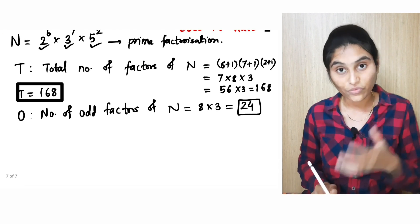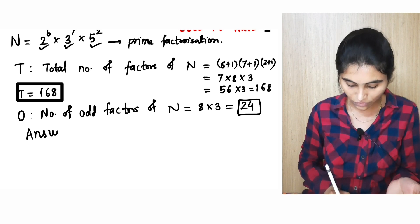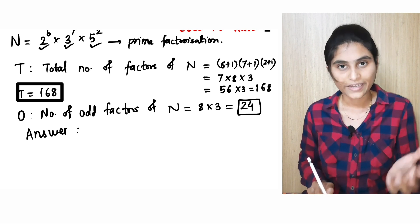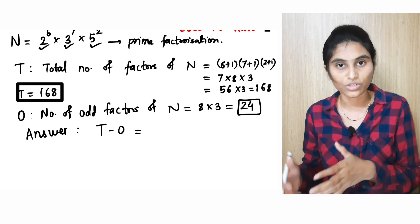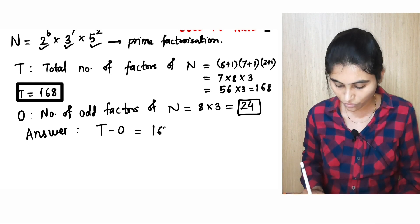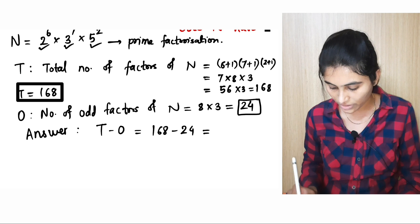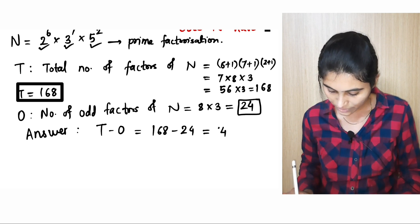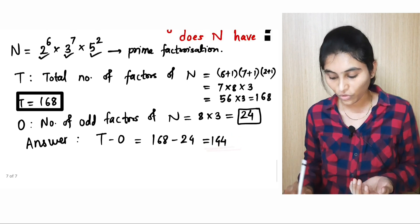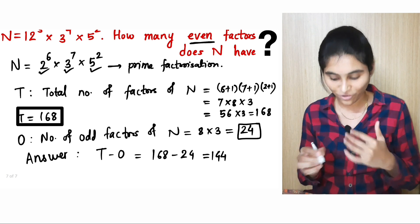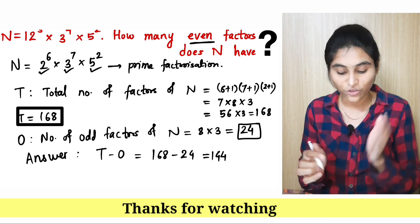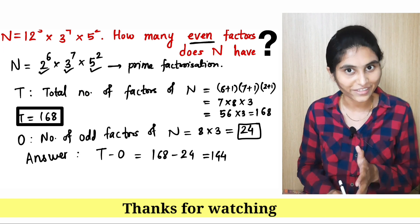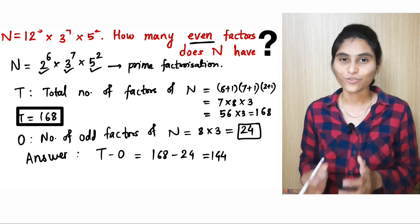So the number of even factors — our answer — is just equal to T minus o, the total number of factors minus the total number of odd factors. This is equal to 168 minus 24, which is equal to 144. So the total number of even factors of n is 144, meaning there are 144 even numbers that divide n. I hope you find this useful. Thank you for watching this video.